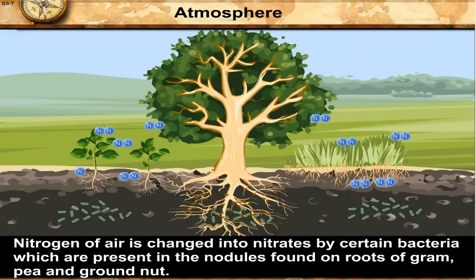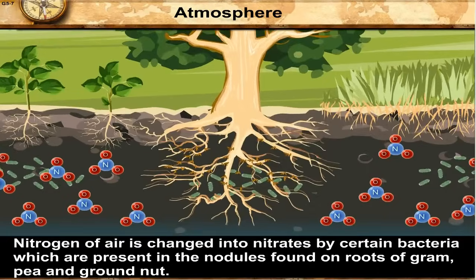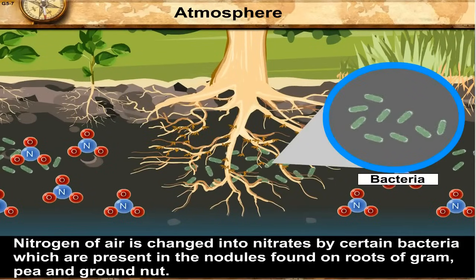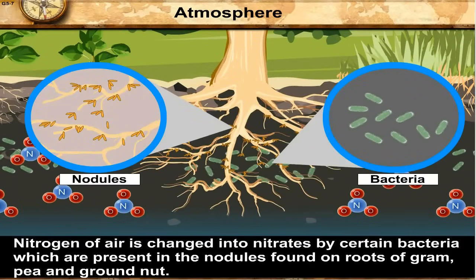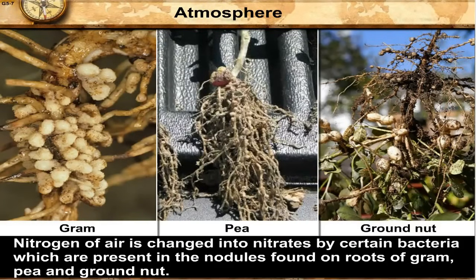Nitrogen of air is changed into nitrates by certain bacteria which are present in the nodules found on roots of gram, pea and brown nut.